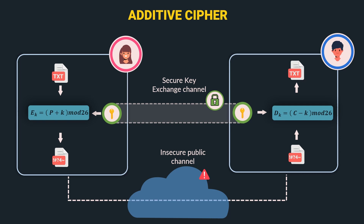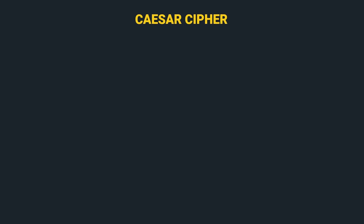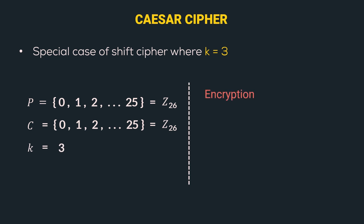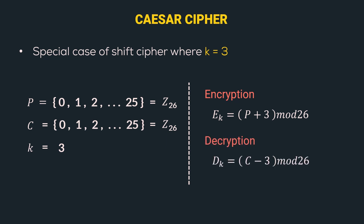Now let's go to a special case of additive cipher — that is Caesar cipher. Here the key is equal to 3. Your P has the same range as the additive cipher, C also has the same range, however the key is always 3. So the encryption algorithm is E(k) = P + 3 mod 26, and the decryption algorithm is D(k) = C − 3 mod 26.